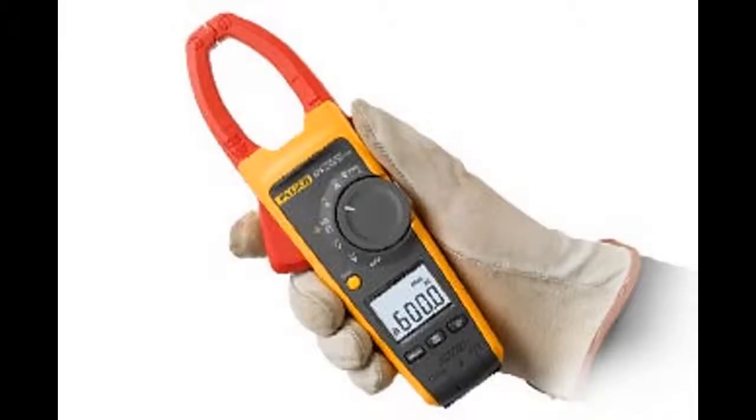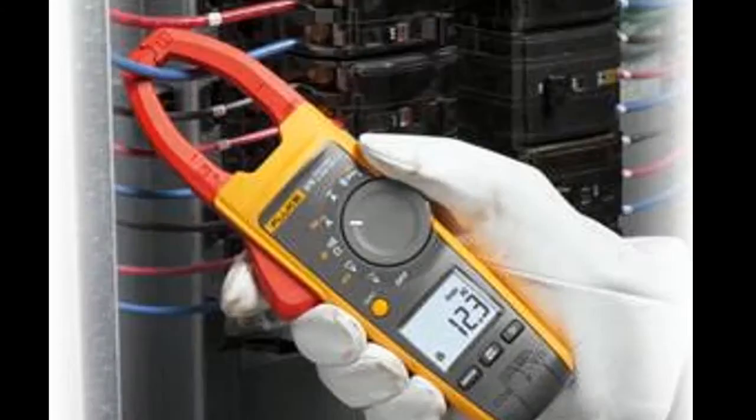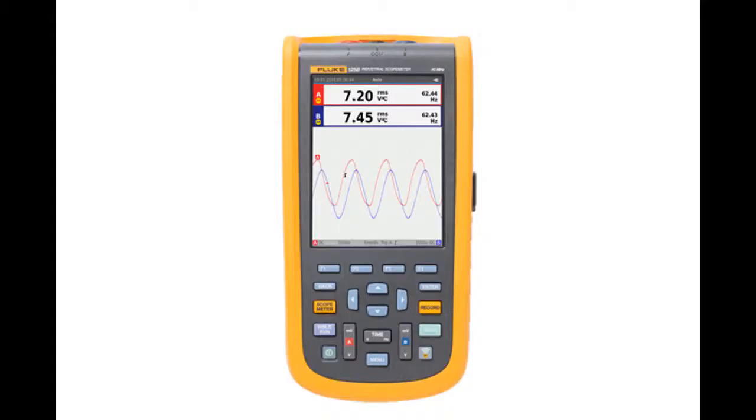Other meters like Fluke clamp meter allow you to measure current through a circuit just by clamping it with a wire like so, with all other basic functionalities like other meters have. Some meters also contain a low bandwidth oscilloscope like this Fluke 120B series oscilloscope multimeter.